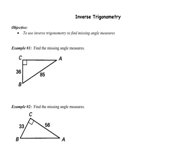Welcome to the video on inverse trigonometry. This is going to be the inverse of what we were doing yesterday. So yesterday you set up a trig ratio in order to find a side. Today we're going to work backwards — we're going to use inverse trig to find angle measures. This time I'm going to give you the sides and you're going to find the angles.